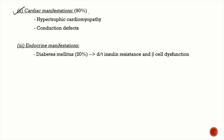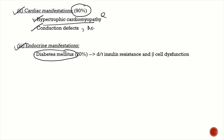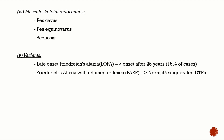Extra-neurological manifestations include cardiac involvement in 90% of patients — most commonly hypertrophic cardiomyopathy — along with conduction defects and atrial fibrillation. Endocrine manifestations include diabetes mellitus in 20% of patients, due to both insulin resistance and beta-cell dysfunction. Musculoskeletal deformities include pes cavus, pes equinovarus, and scoliosis.